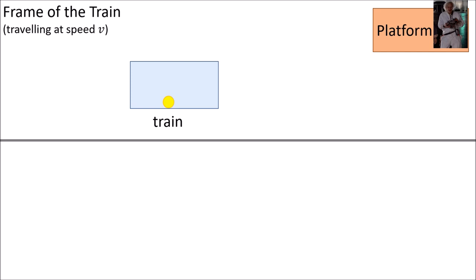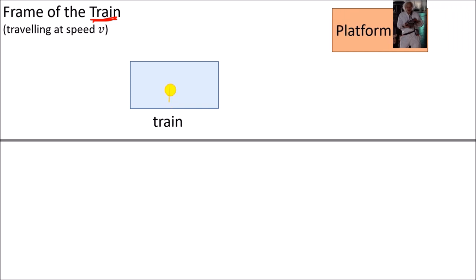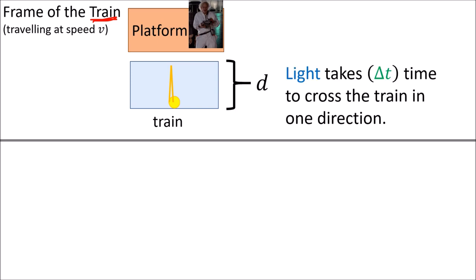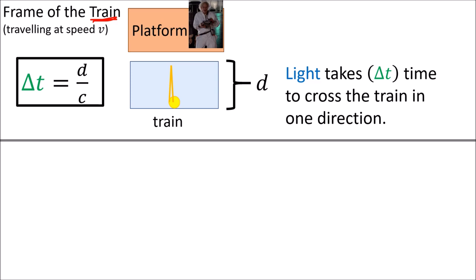Let's start with the train's frame of reference. A passenger on the train will see the platform outside pass by as the beam of light travels back and forth. If the width of the train car is given by the distance d and the light beam takes a time delta t to cross the train car in one direction, then delta t would be equal to the width of the train car d divided by the speed of the light beam c.